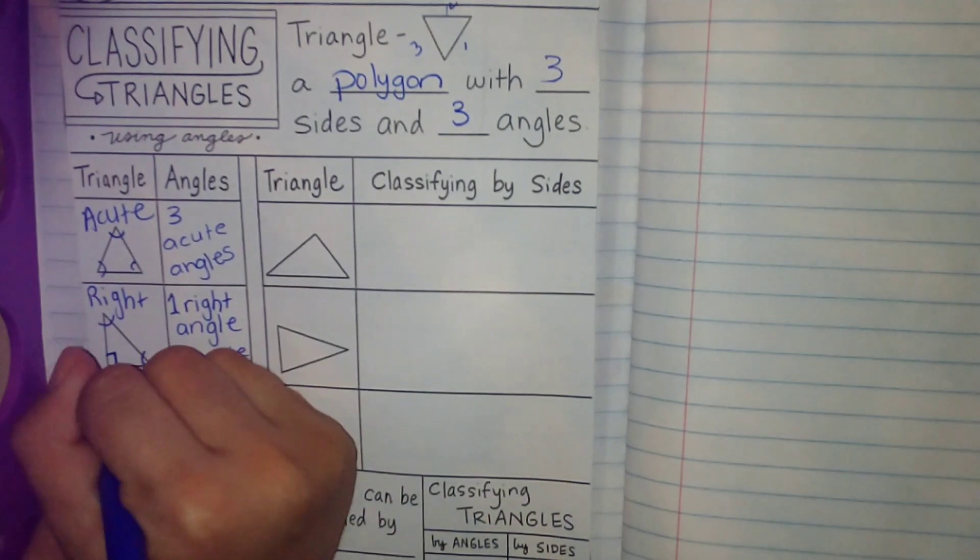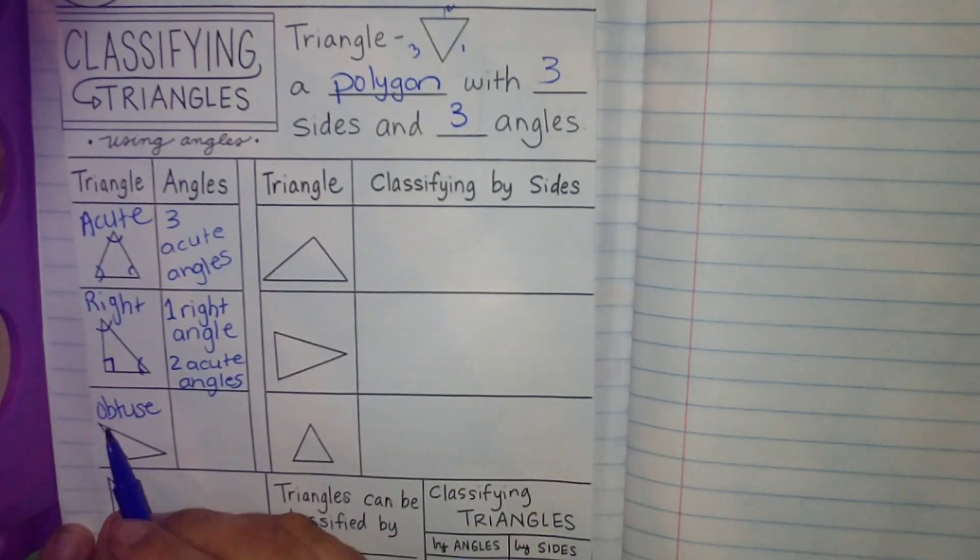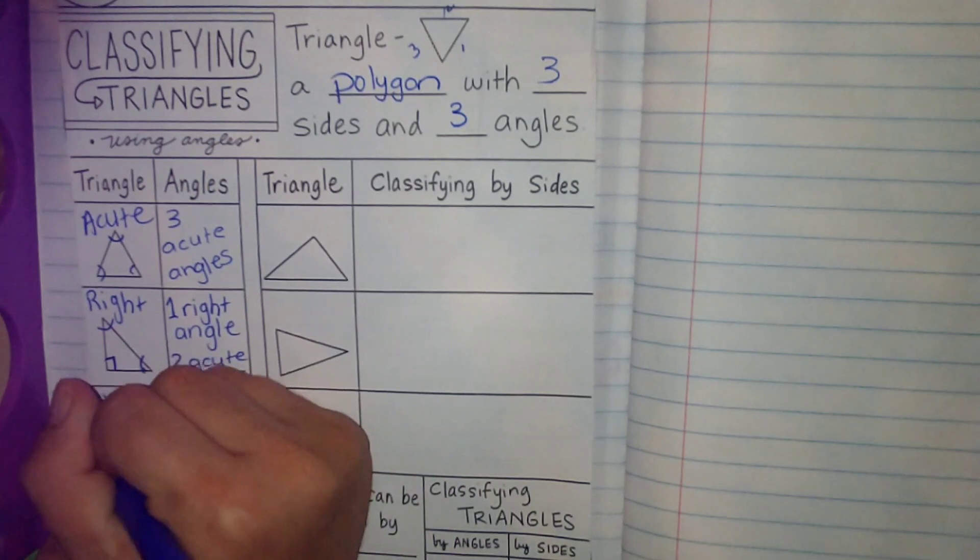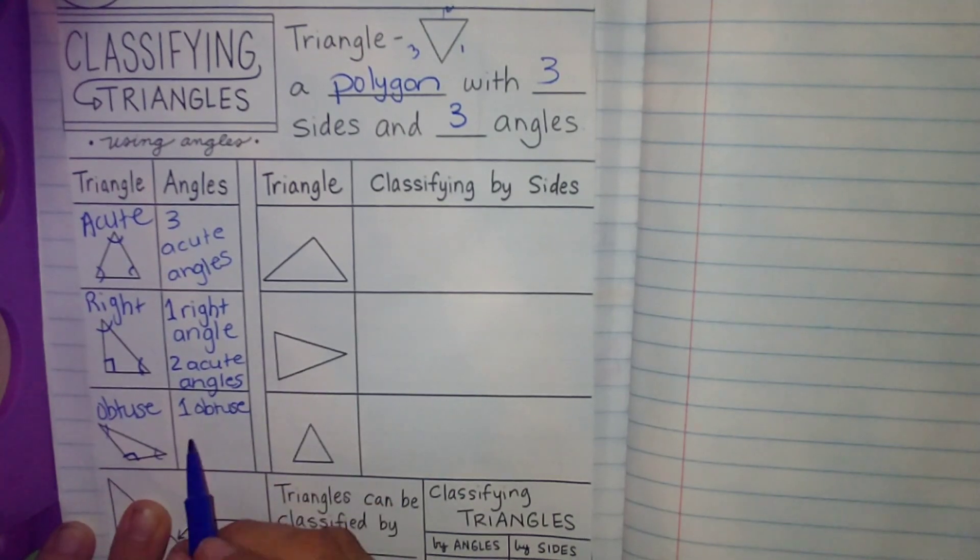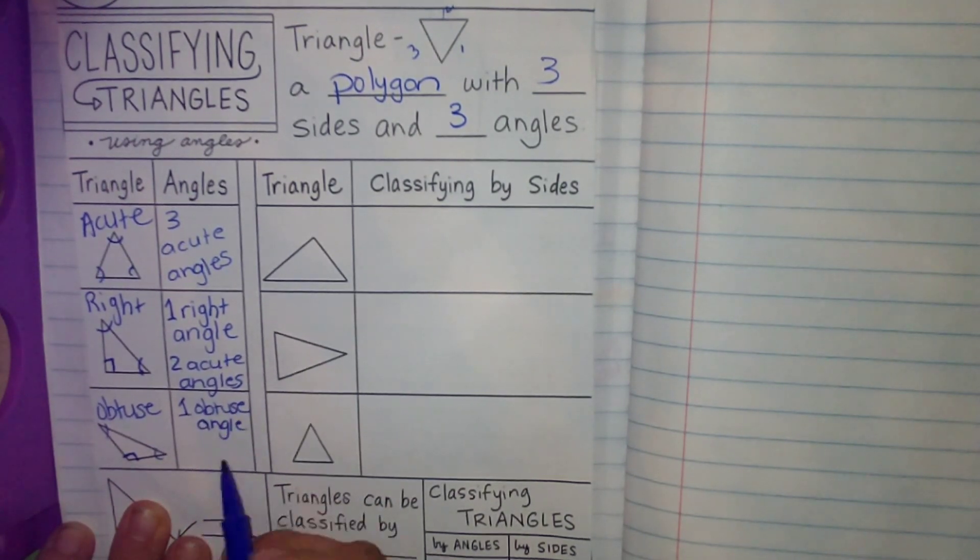Then we have obtuse. Obtuse is very large. It has a large angle, an obtuse angle, and then it has two acute angles. So one obtuse, very large angle, more than 90 degrees and two acute angles.